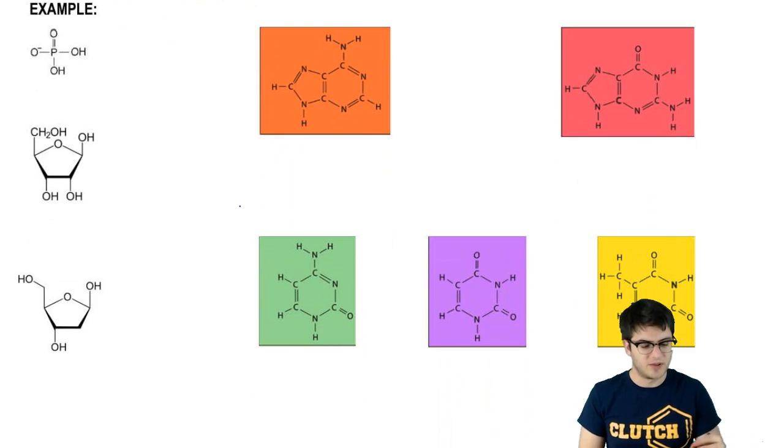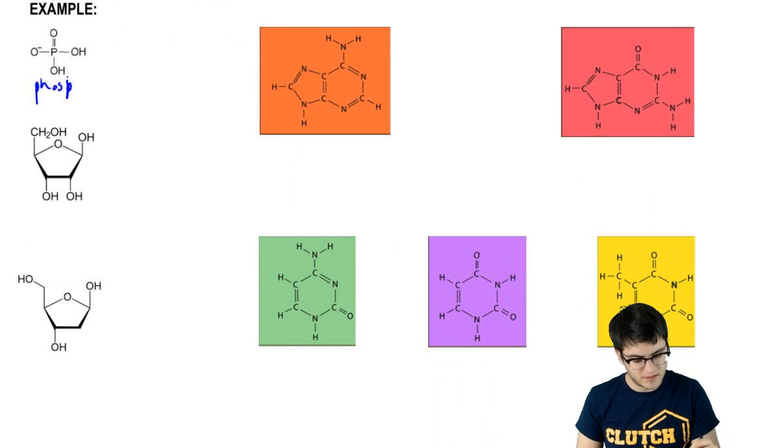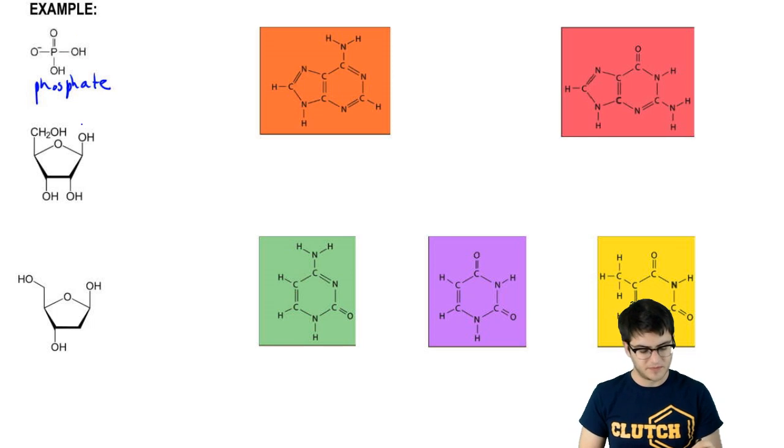At the top of our example, we can see phosphate. Remember, phosphate carries a negative charge. Underneath phosphate, we have ribose, which is the pentose used in RNA.